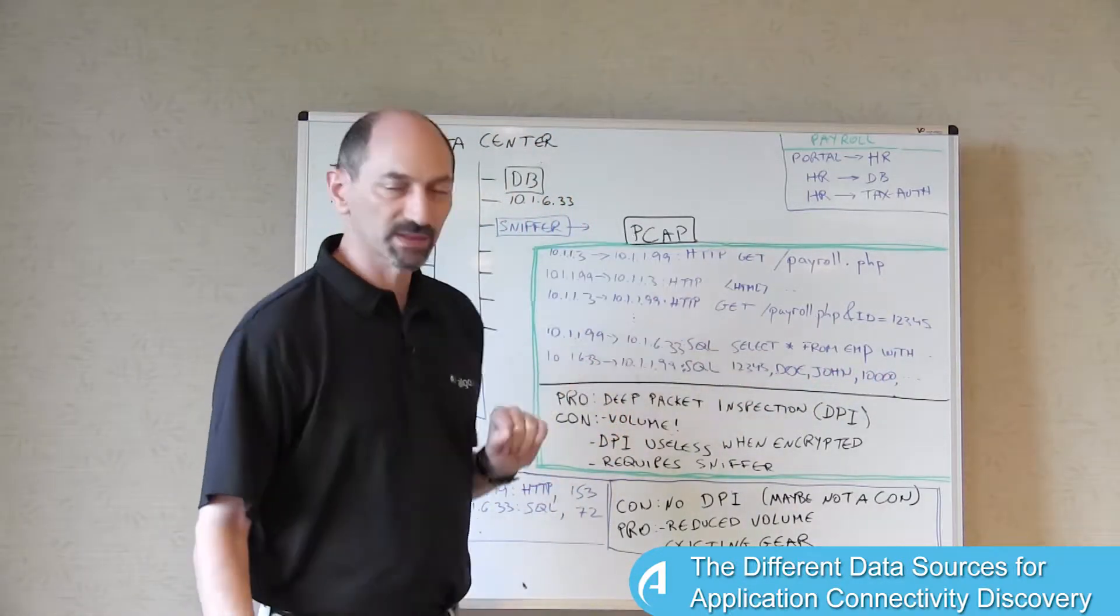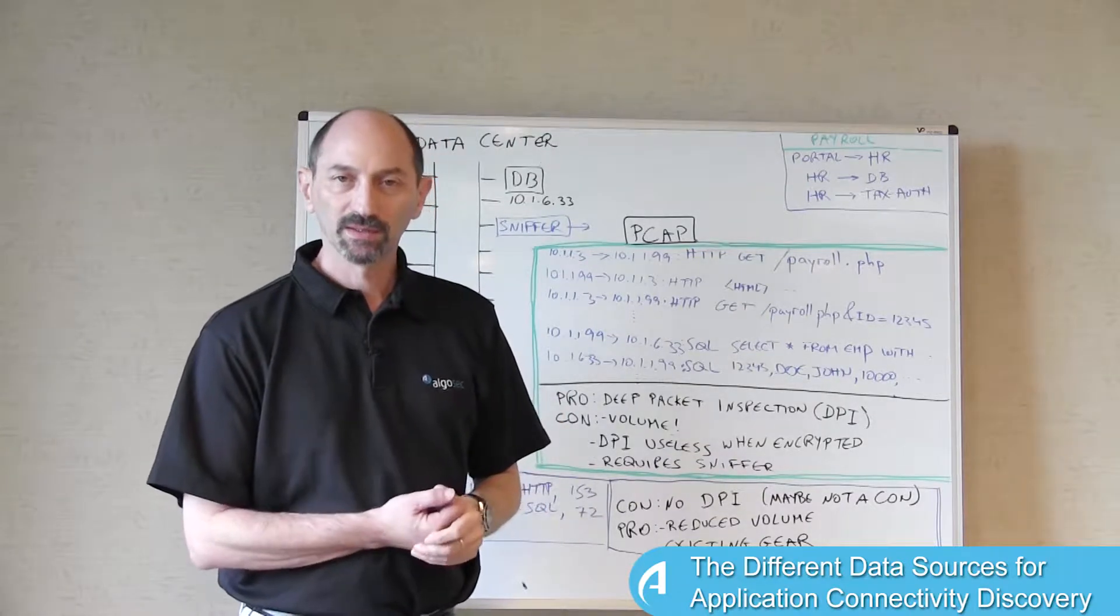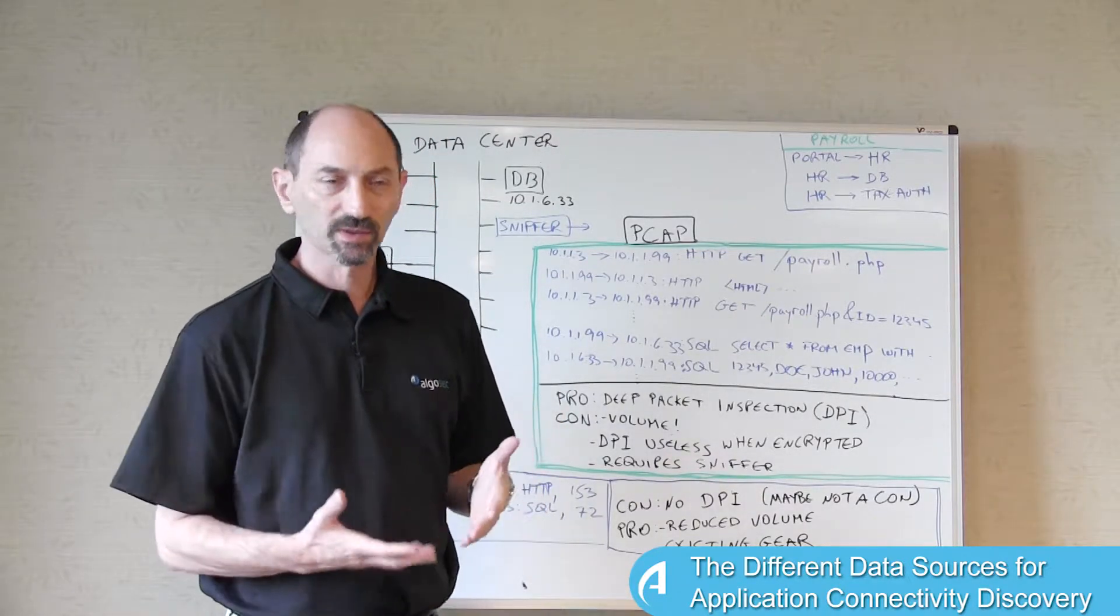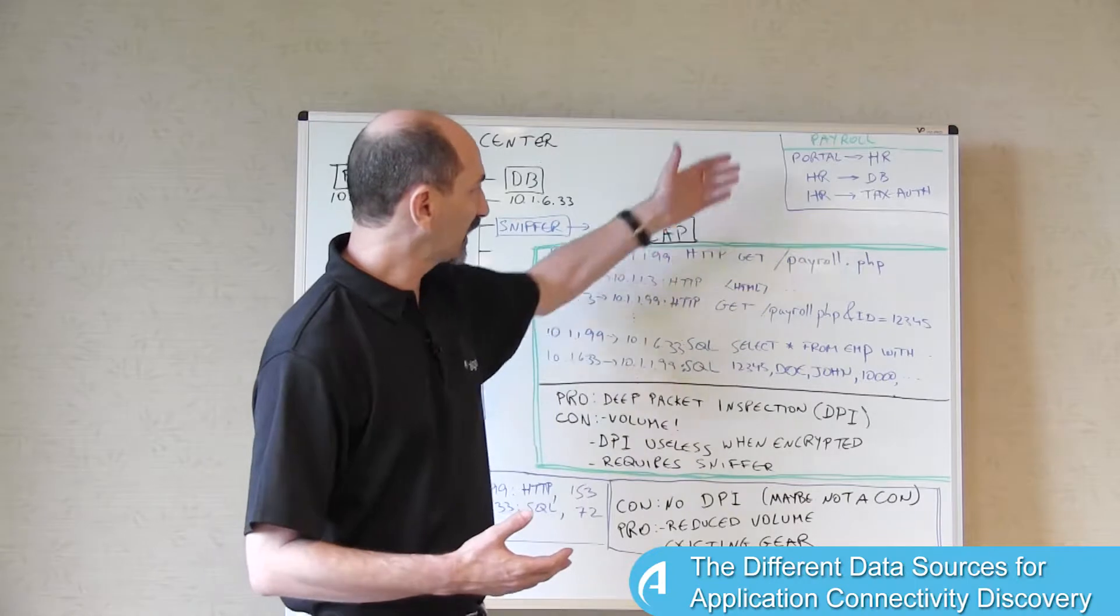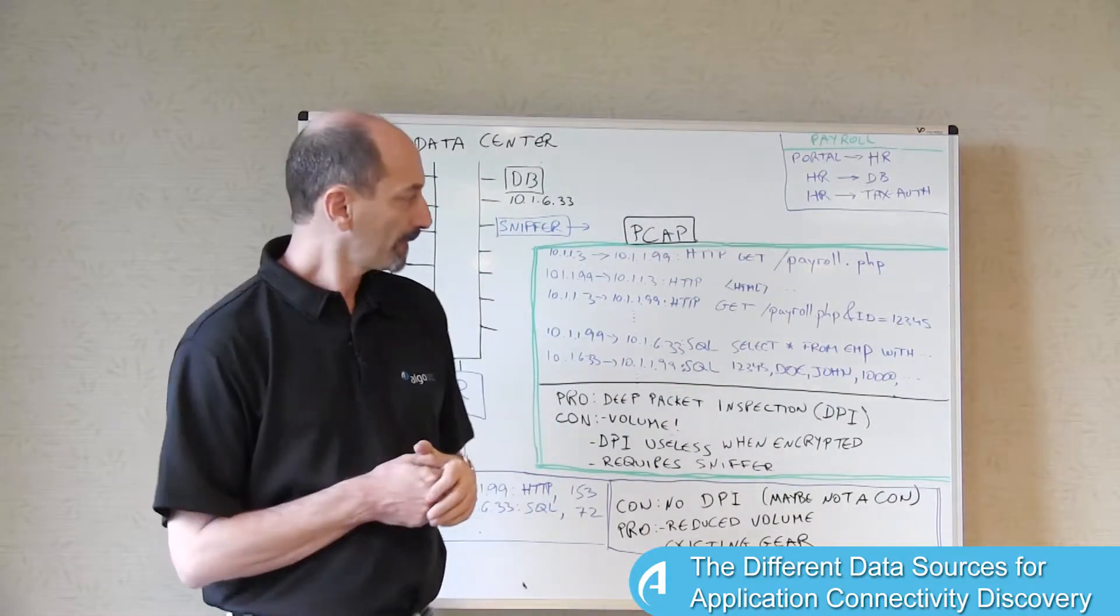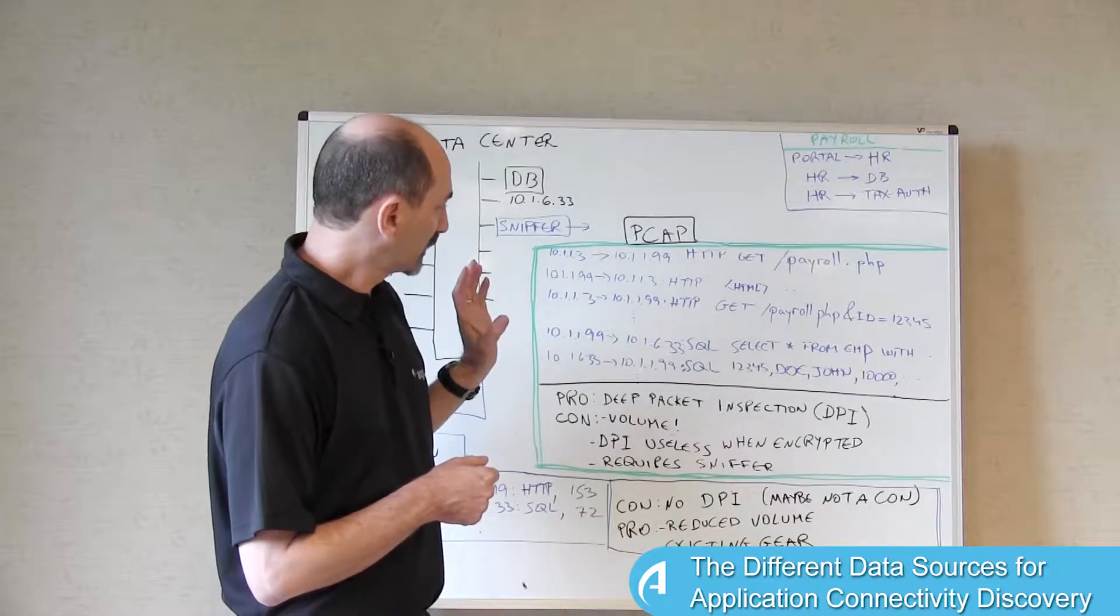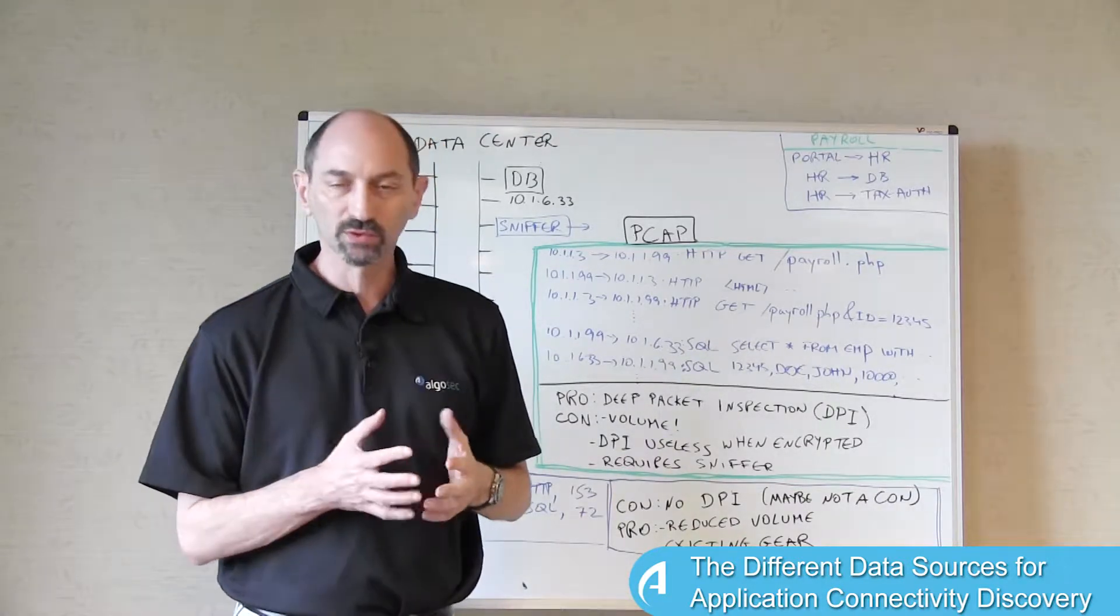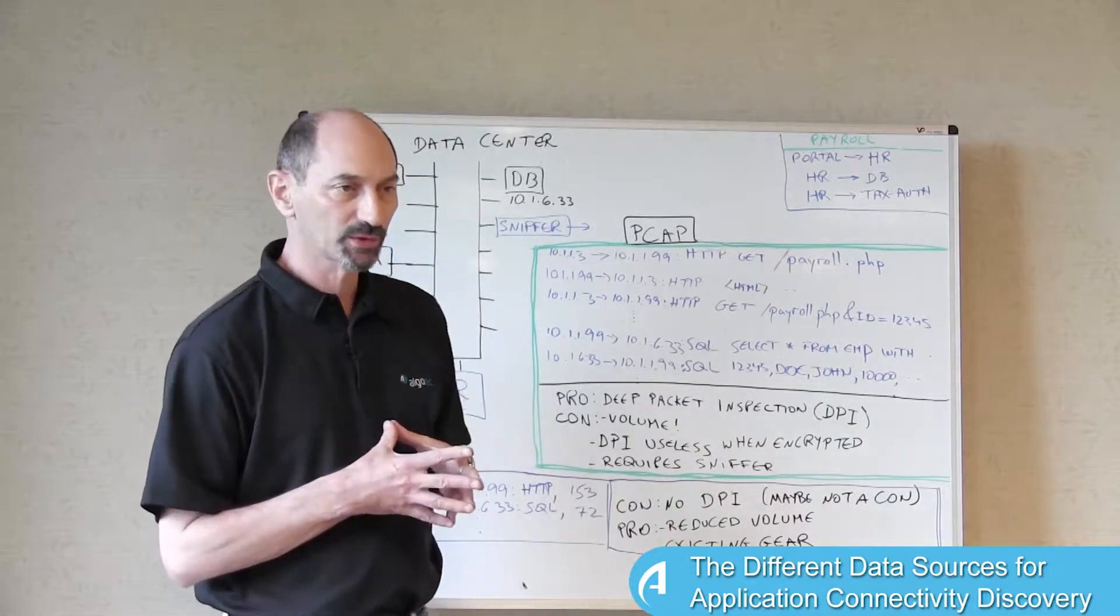Having access to this information and using deep packet inspection provides us with levels of information that let us get this higher level of abstraction we're looking for. Now, this approach has two challenges that we should bear in mind.